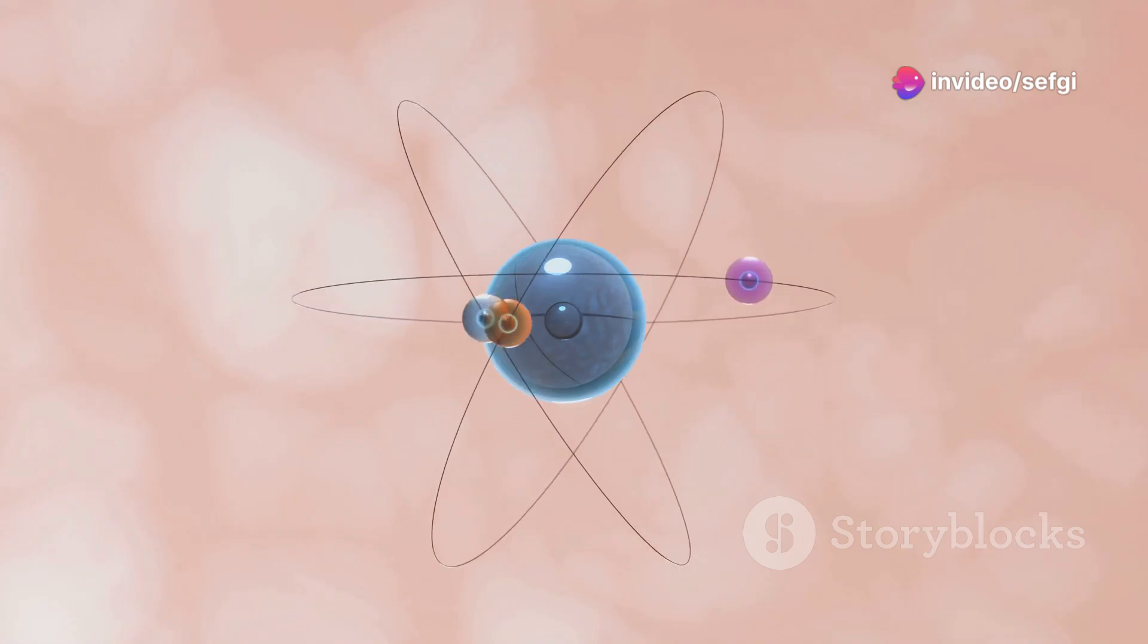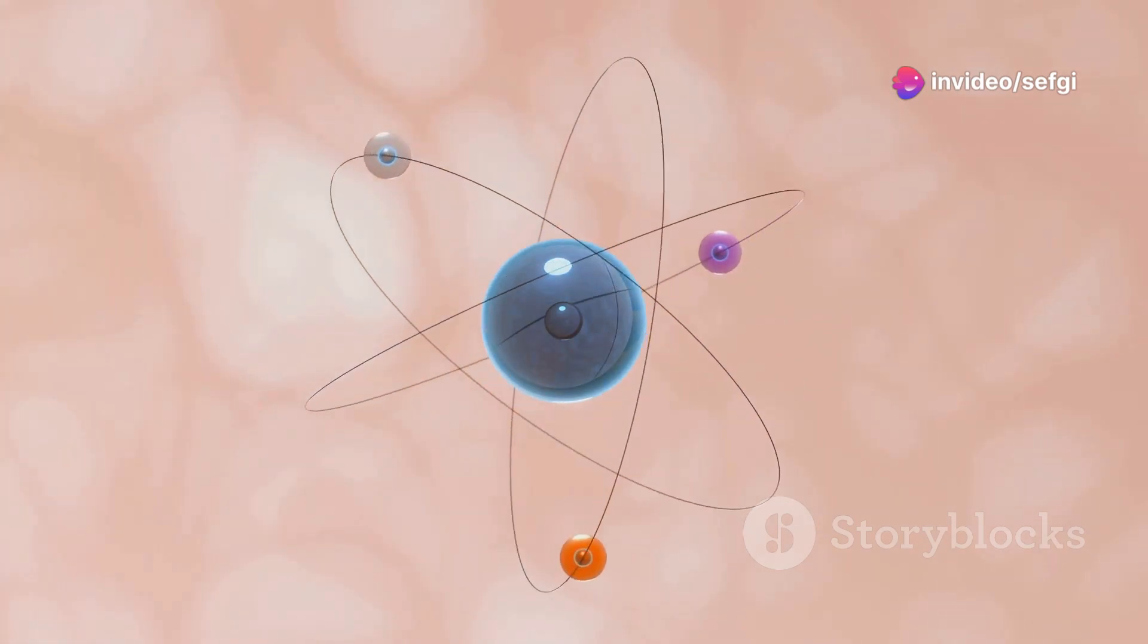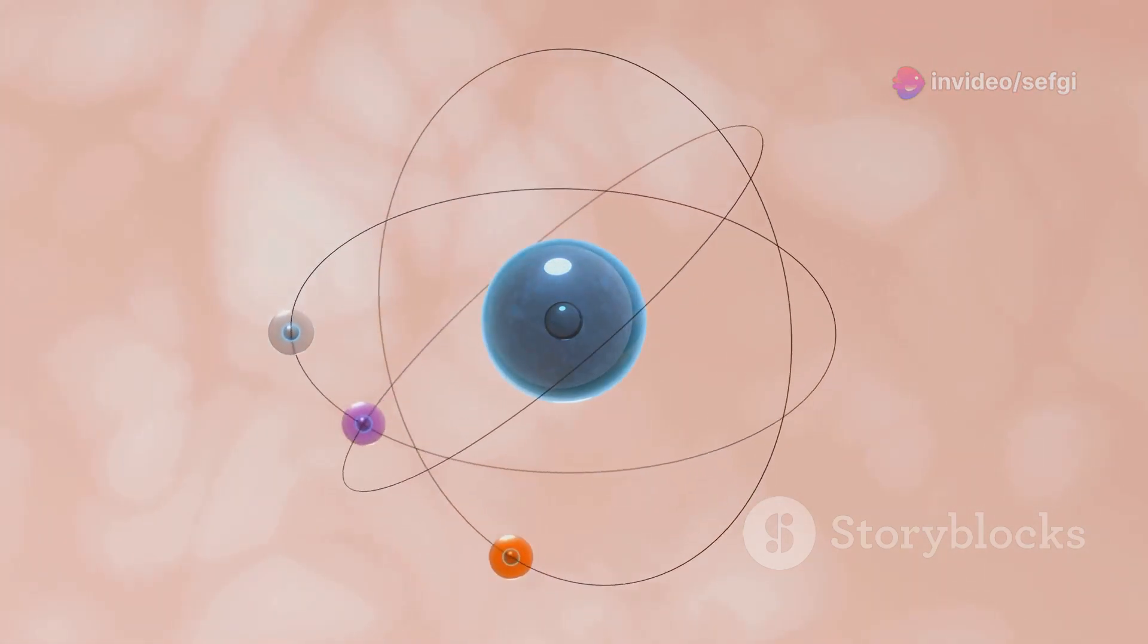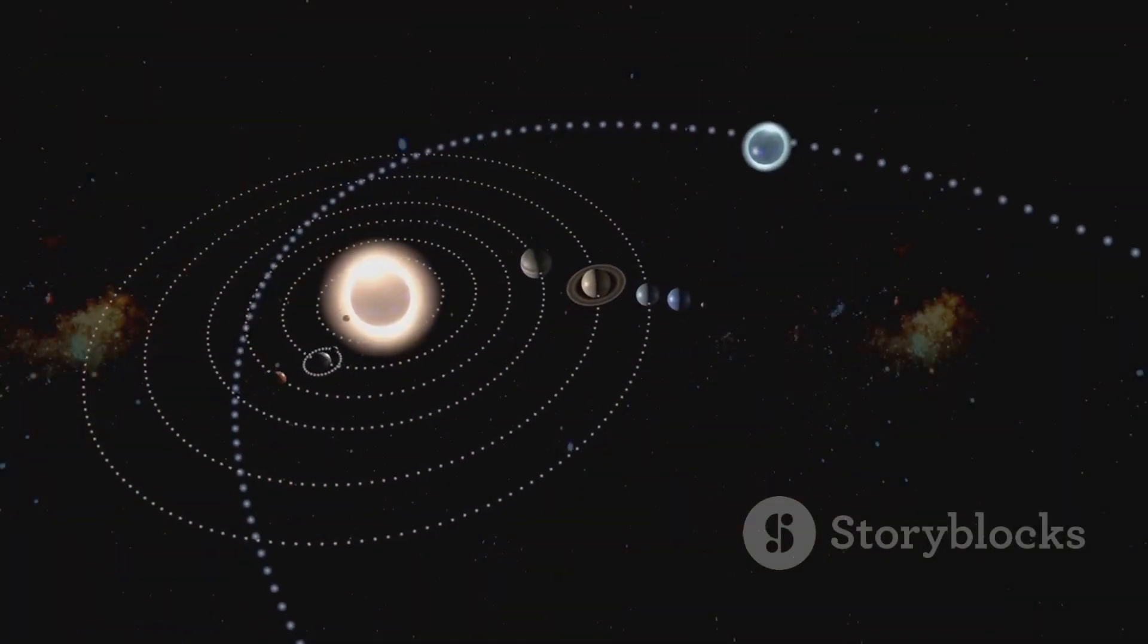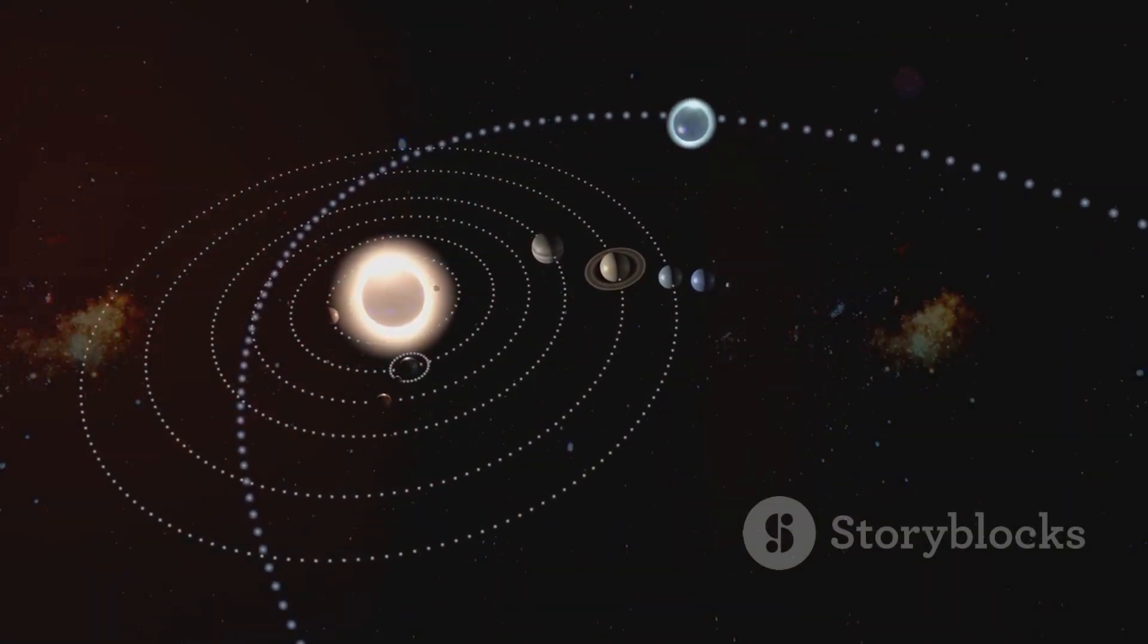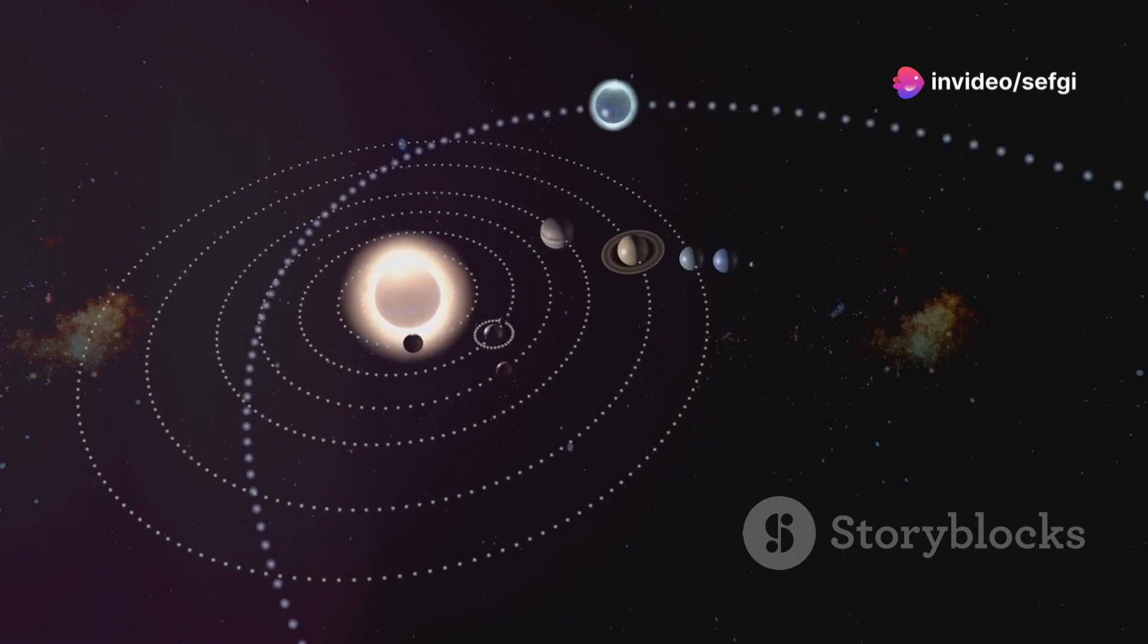For example, electrons don't orbit the nucleus like planets around the sun. The classical image of electrons as tiny planets circling a central nucleus is an oversimplification. Instead, electrons exist in regions of space called orbitals, where they are likely to be found.